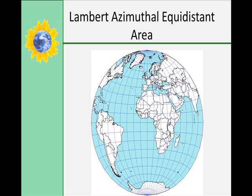The Lambert azimuthal equal-area is used to map large ocean areas. So if you were working for the National Oceanographic and Atmospheric Administration, or NOAA, you would use one of these. Central meridians are straight lines, and the others are curved.